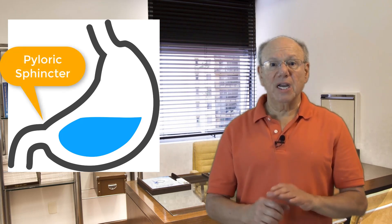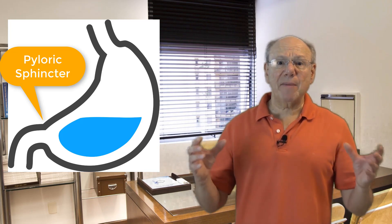Food exits the stomach through the pyloric sphincter on the bottom. The pyloric sphincter is more like a chemical switch. It opens when the partially digested food in the stomach reaches the proper level of acidity.